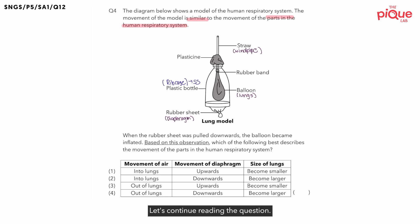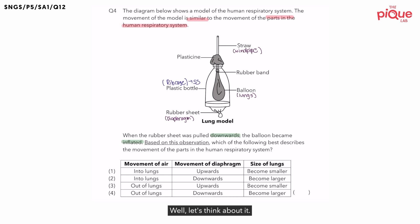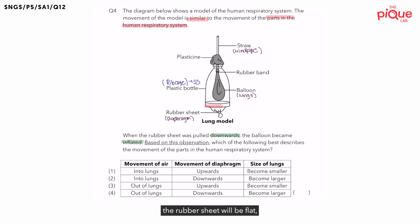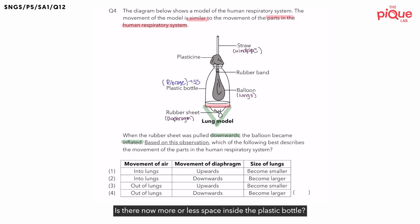Let's continue reading the question. When the rubber sheet was pulled downwards, the balloon became inflated. Why would the balloon become inflated? If the rubber sheet was not pulled downwards, it would be flat — highlighted in red. But when the rubber sheet is pulled downwards, this is how the lung model looks. Is there now more or less space inside the plastic bottle? There is now more space inside the plastic bottle.